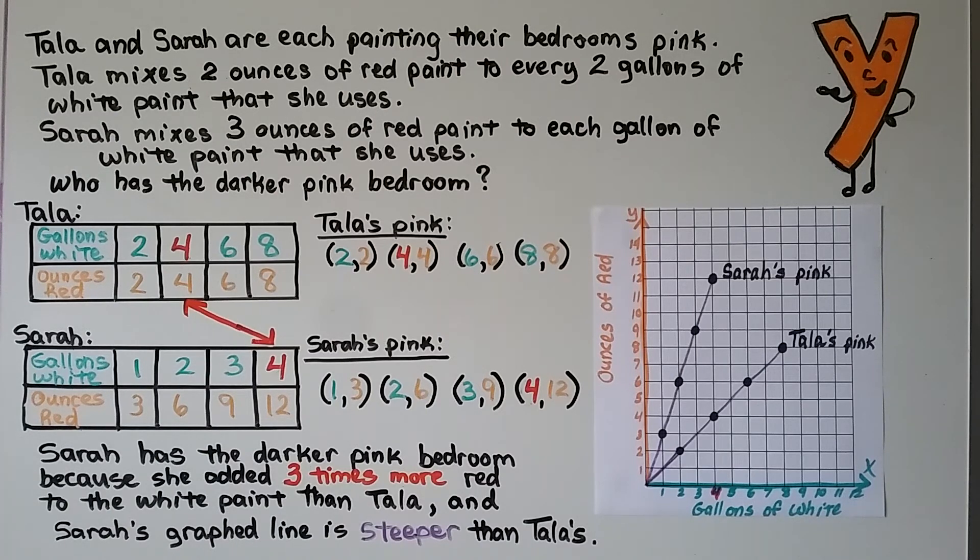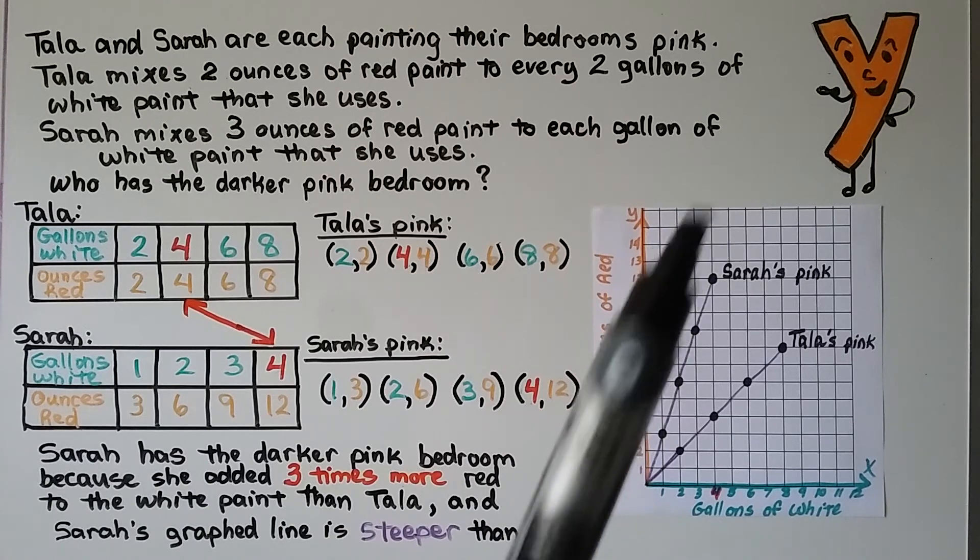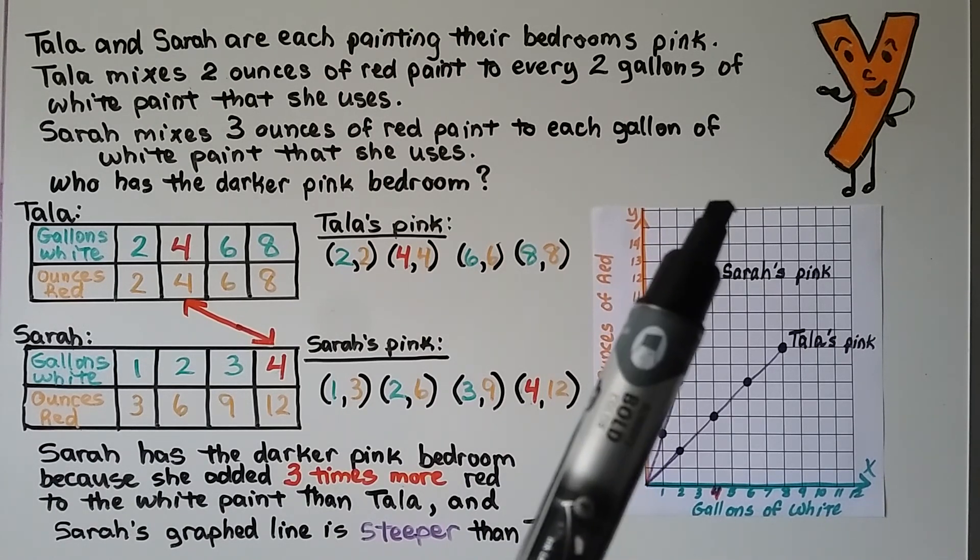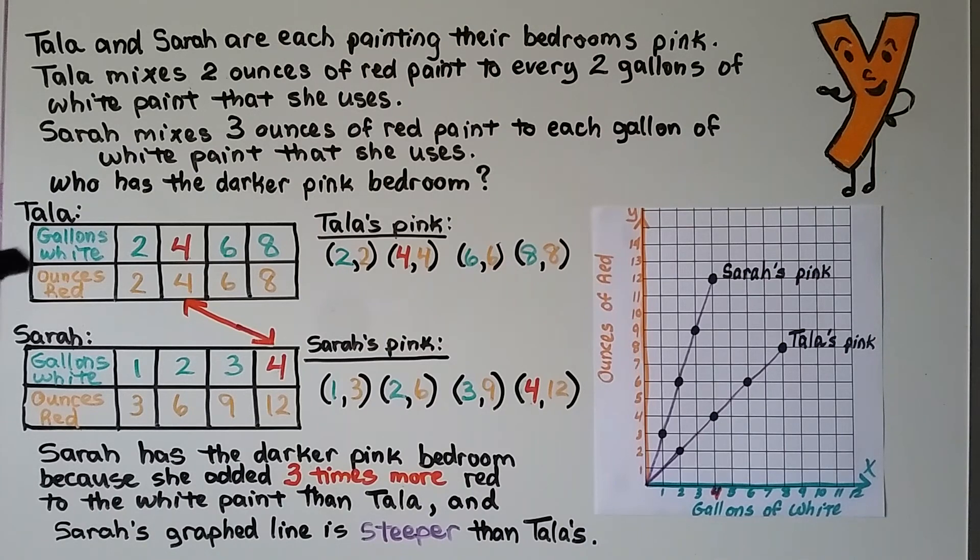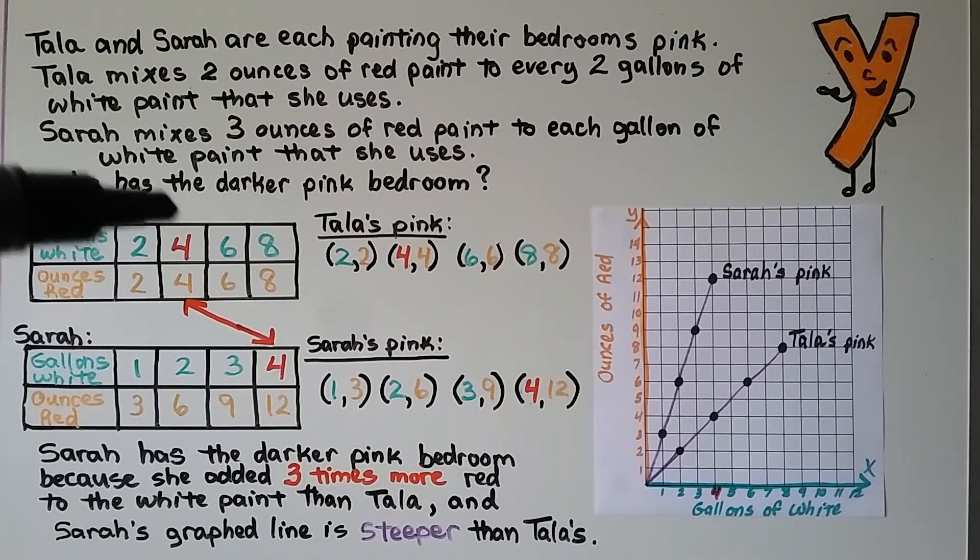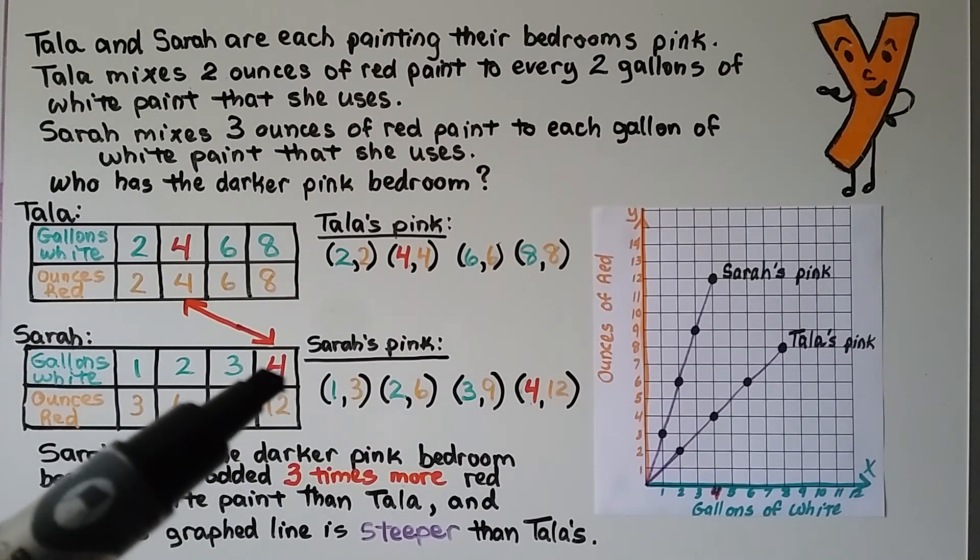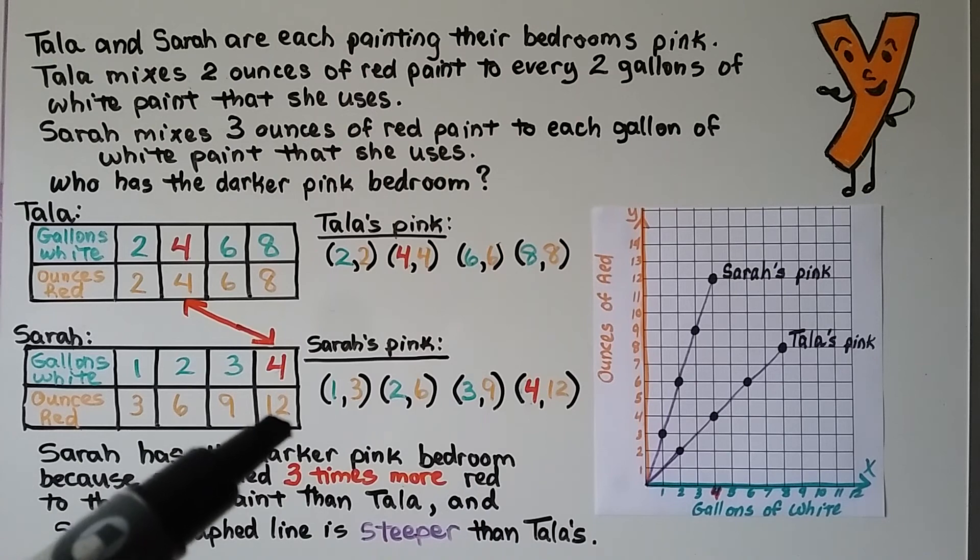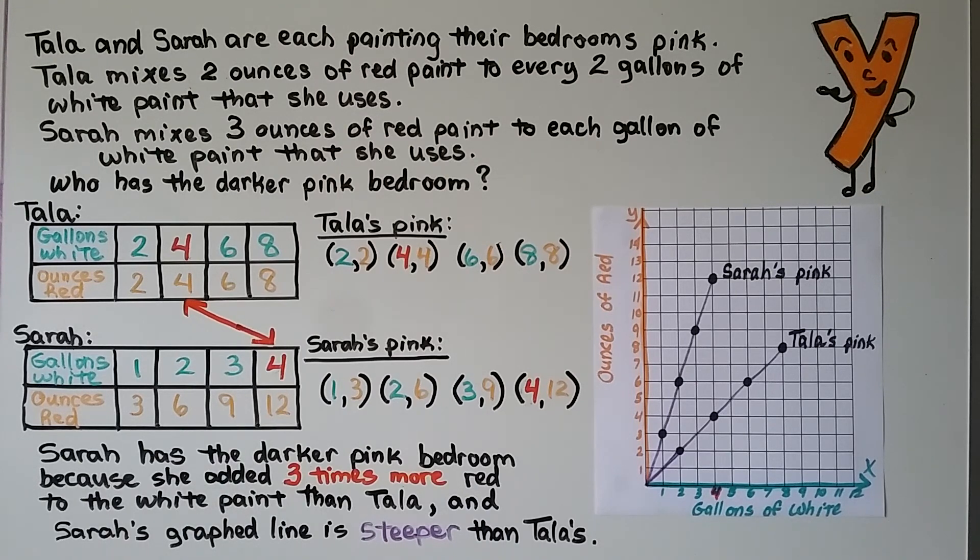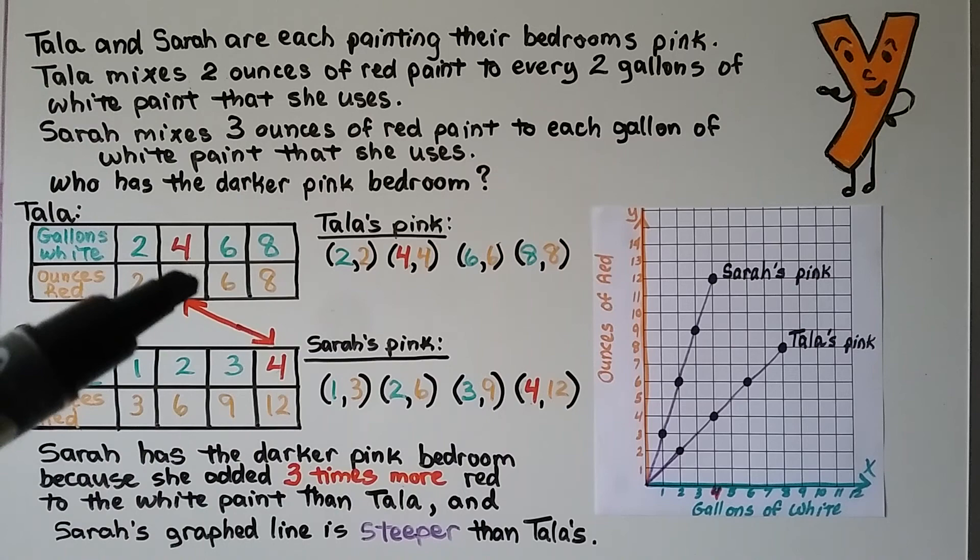Sarah has the darker pink bedroom because she added 3 times more red to the white paint. And Sarah's graphed line is steeper than Tala's. That's how much red. She used more red. So her line is steeper with higher numbers of red. And when you look at their tables, when you get to 4 gallons, there's 4 ounces of red for Tala. But when you get to 4 gallons for Sarah, there's 12 ounces of red. See how it's 3 times more? 12 is 3 times more than 4.